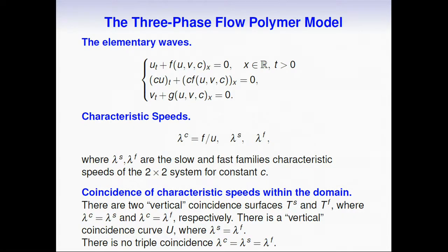Let's analyze the elementary waves for the system. We have the same characteristic speed, the contact speed, and the two others. S means slow and F means fast, families of the characteristic speeds of the two-by-two system for constant c. Now we have not only a curve of coincidence but two vertical coincidence surfaces, T^S and T^F, where there is coincidence between lambda S and lambda C, and lambda F and lambda C respectively. Also, we have a coincidence curve U where lambda S coincides with lambda F.